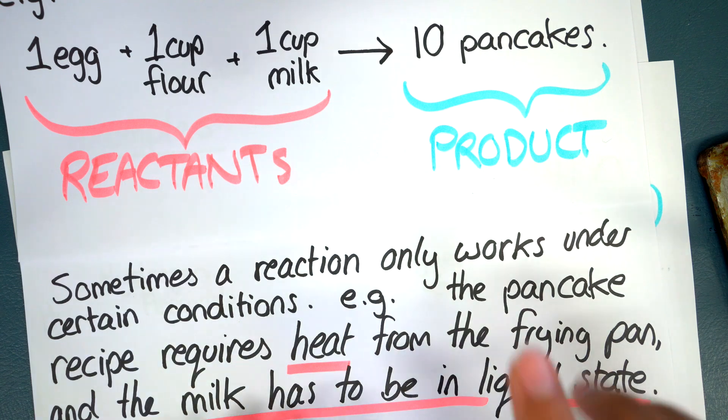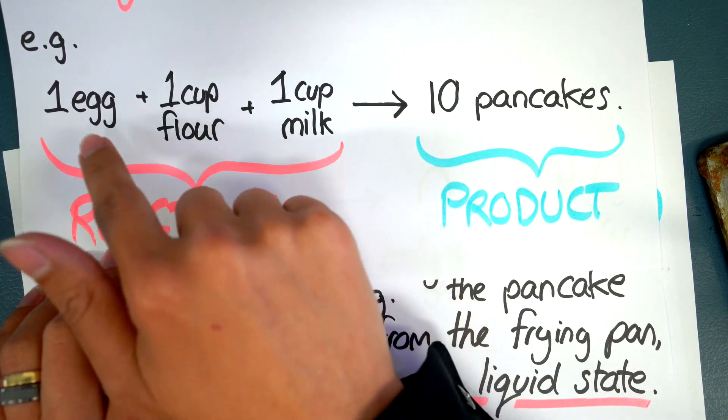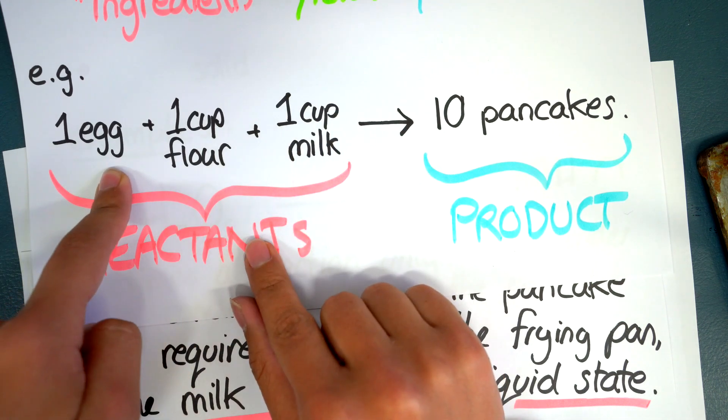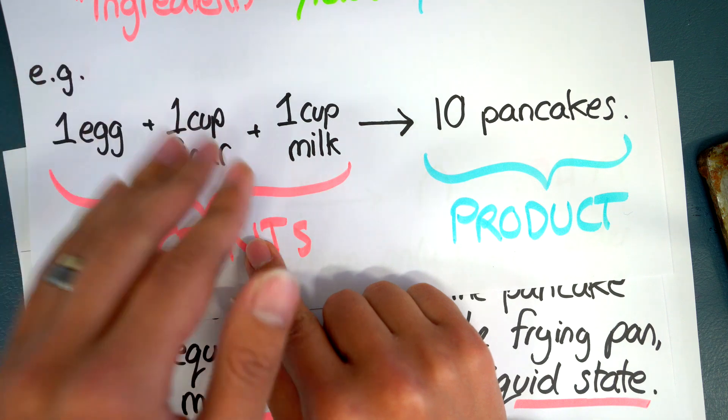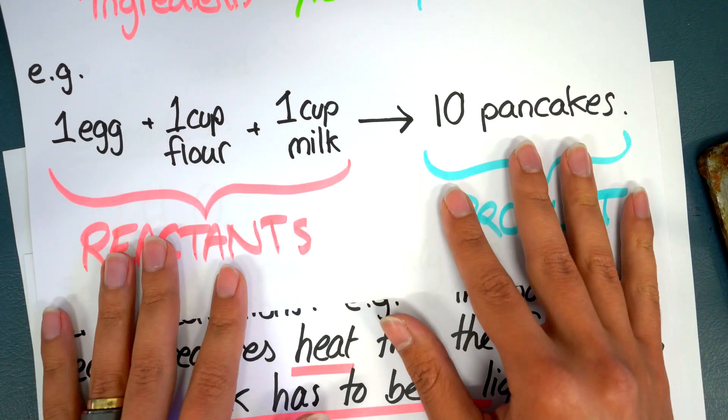And also the state of these ingredients or reactants, they're important. It'll only work if your egg is in liquid state. It's not going to work if it's a solid. And the flour, and the milk. Milk can't be frozen, it has to be liquid milk otherwise you can't stir it together and make the batter mix.